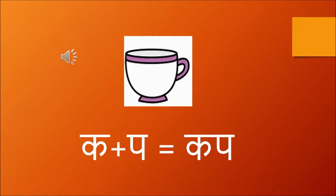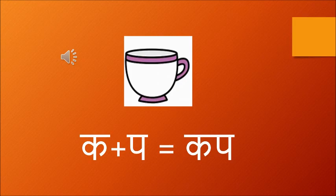We will go to the first one, that is cup. Can you guess which letters make this? Ka — kabooter wala ka — and pa — patang wala pa. So when ka and pa come together they make cup. Cup is a utensil in which we drink tea or coffee. That is a cup.